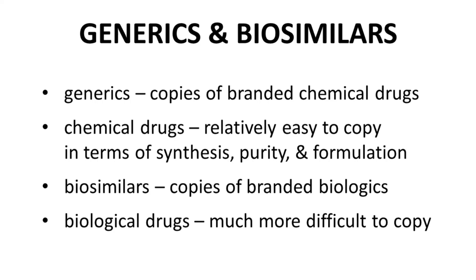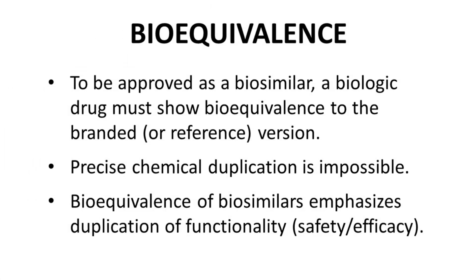Copies of biologics are not called generics — they are called biosimilars. Copying a biological drug is much more difficult because the identity and composition of the biological drug is less clear. This lack of clarity poses a challenge to the creation of biosimilars. If you want to create a biosimilar, you need to establish bioequivalence of the new biosimilar to the branded or referenced biologic. That is very hard since chemical duplication is impossible because chemical characterization of the reference material is likely incomplete. Furthermore, exact cell line and incubation conditions for the biosynthesis may also not be possible to completely replicate. Because a biosimilar will not be identical to the reference biologic, you cannot treat biosimilars like generics.